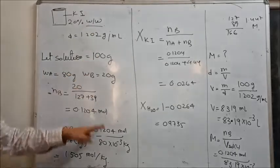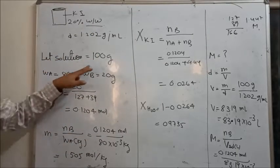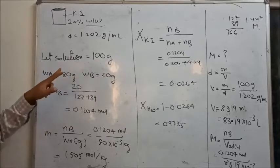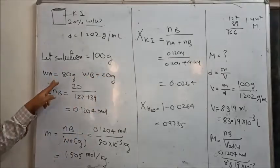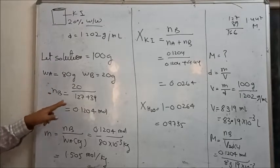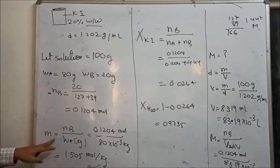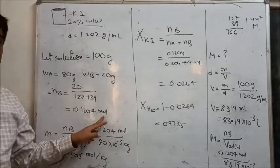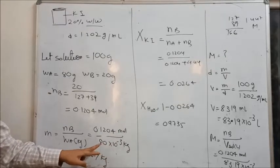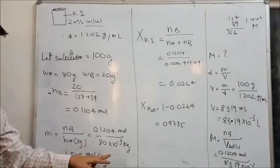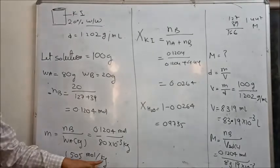To recap: we assumed 100 g of solution, giving 20 g solute and 80 g solvent. Moles of KI = 0.1204 mol. Molality = moles of solute / mass of solvent in kg = 0.1204 / (80 × 10⁻³) = 1.505 mol/kg.